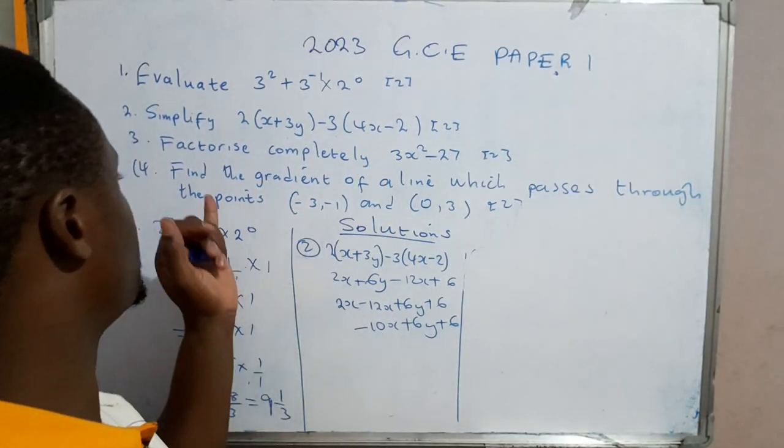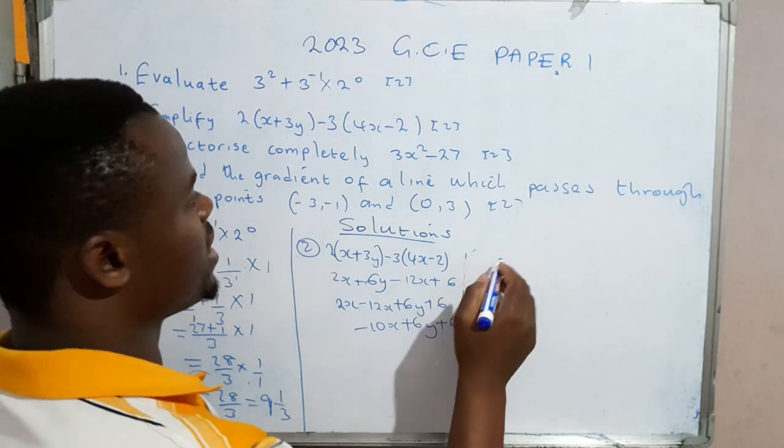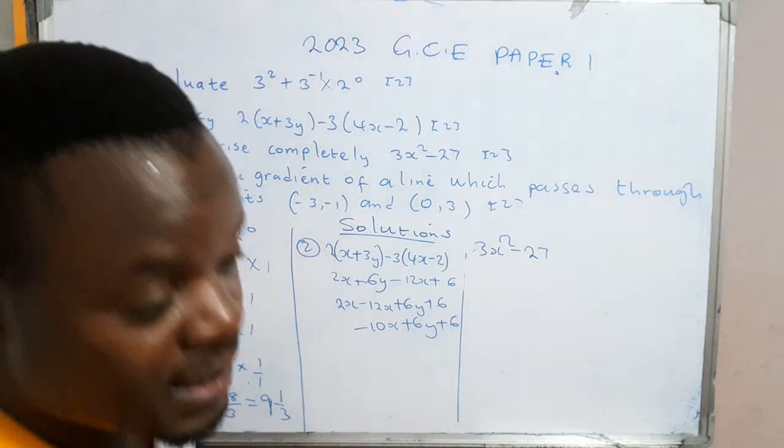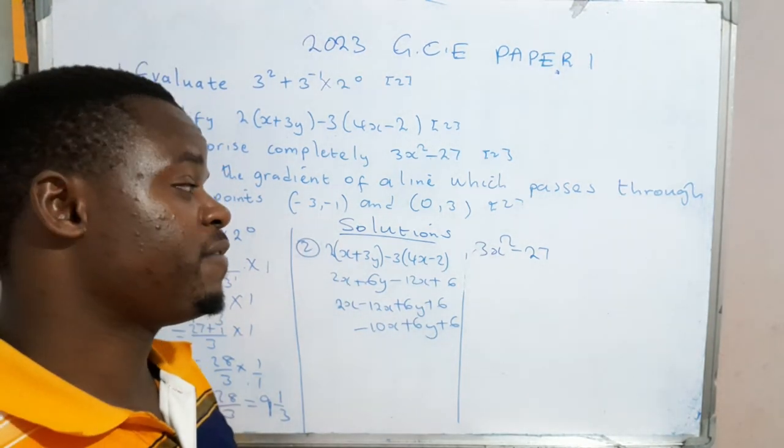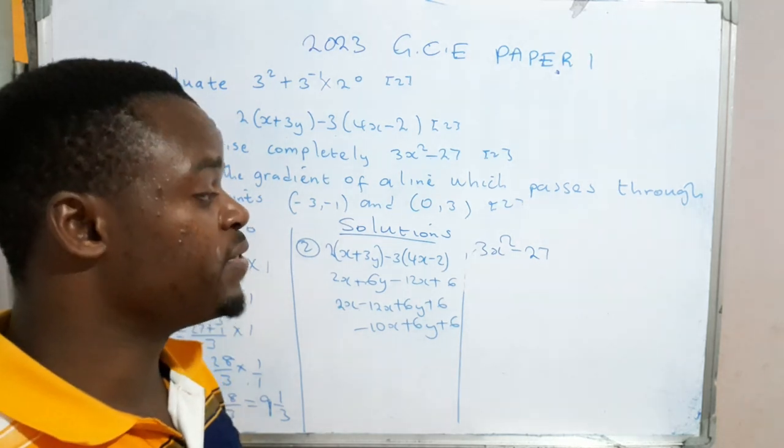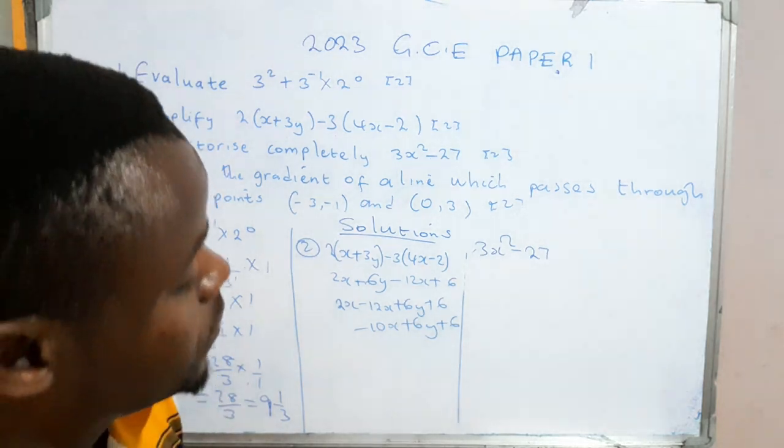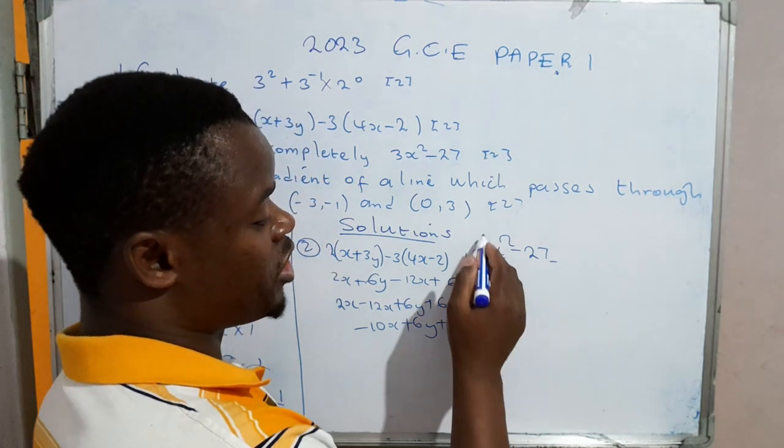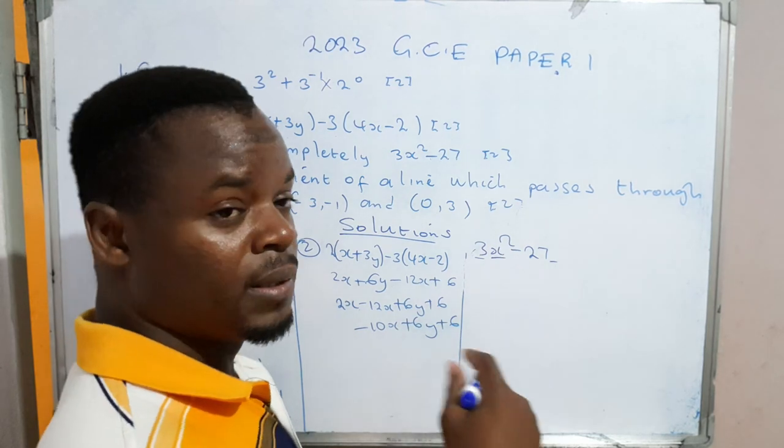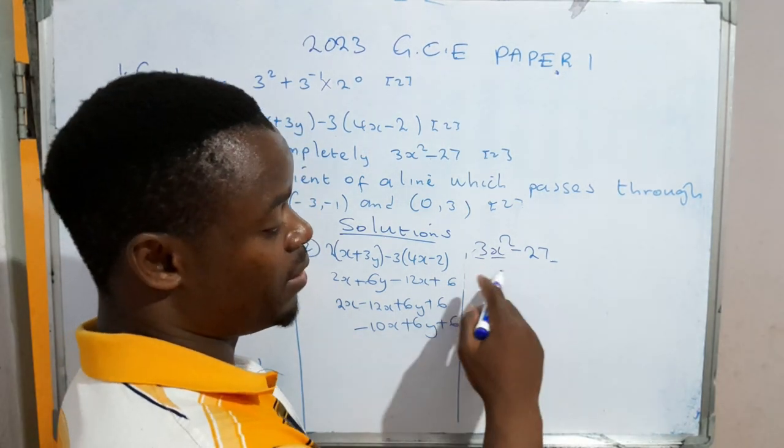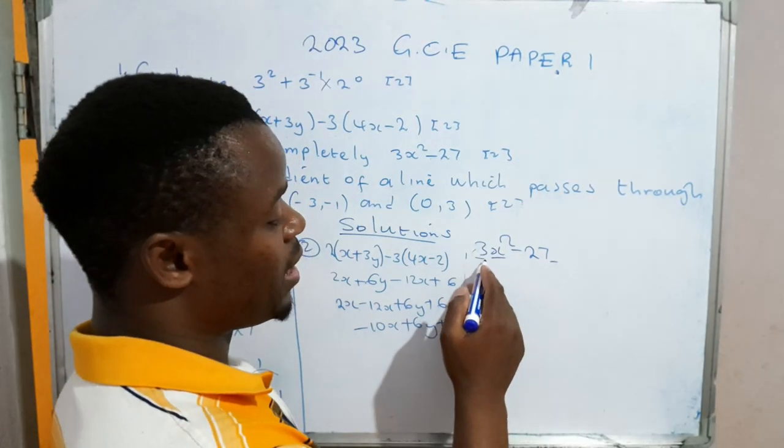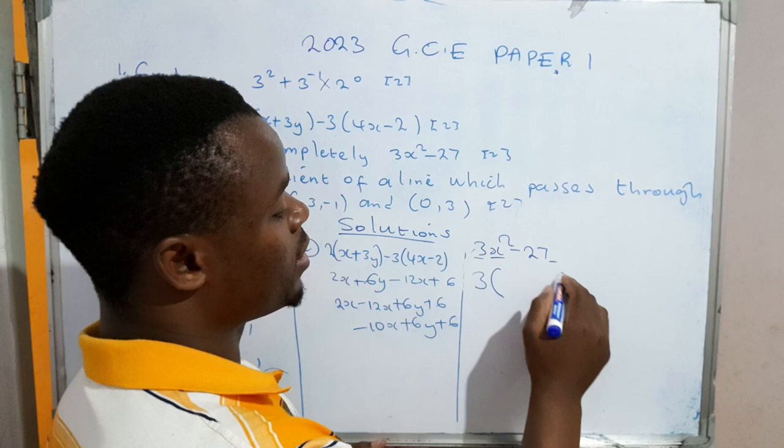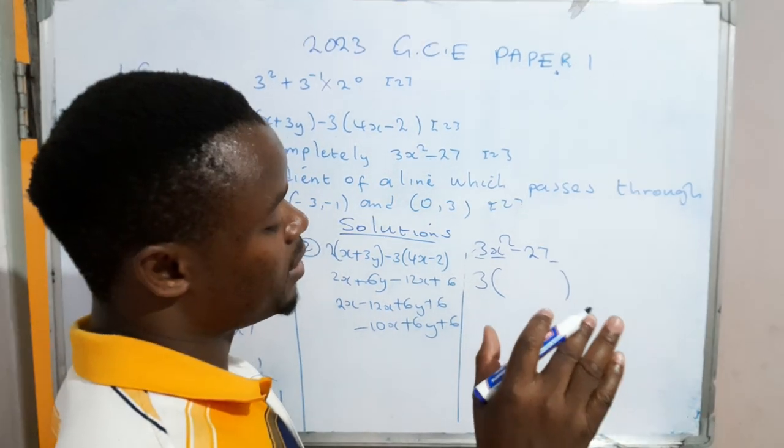Let's now solve question 3, which has to do with factorization. They're saying 3x² - 27 has to be factored. What they want you to do is identify the terms that are common. When you check, there's no x on this side, so we can't say x is common. But 3 is a number that we can divide into both numbers. 3 can be divided into 3 and as well be divided into 27.